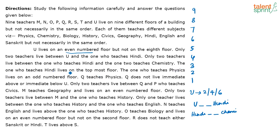The one who teaches Hindi lives on the topmost floor, which is floor nine. Since Hindi is fixed at floor nine, with two persons between U and the Hindi teacher, U must be on floor seven — but U is on an even floor, so U has to be on floor six. Similarly, with two persons between the Hindi teacher and the chemistry teacher, that person also lands on floor six. So U is on floor six teaching chemistry.